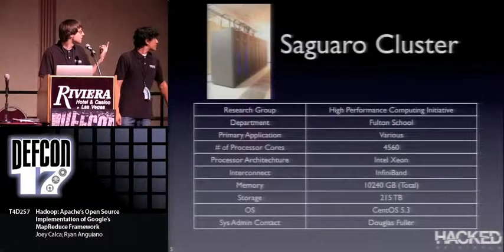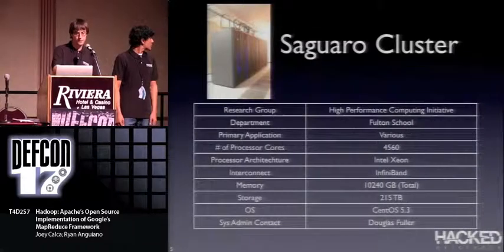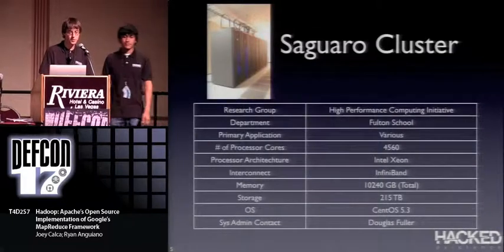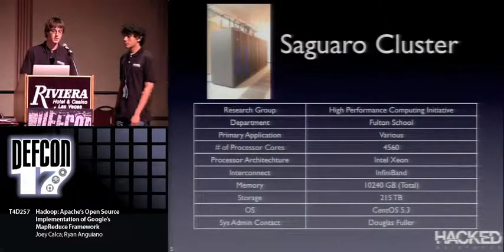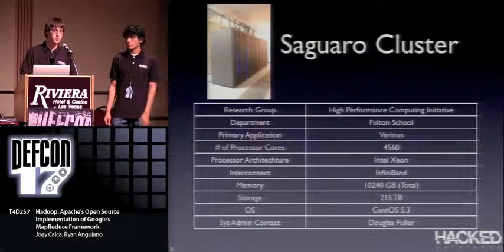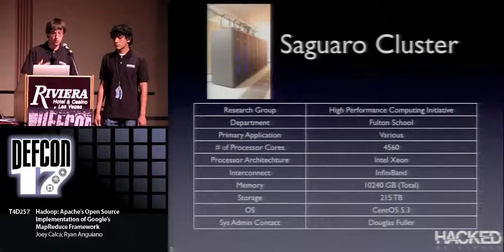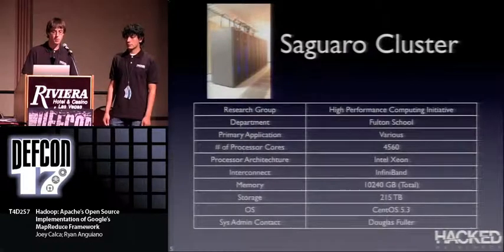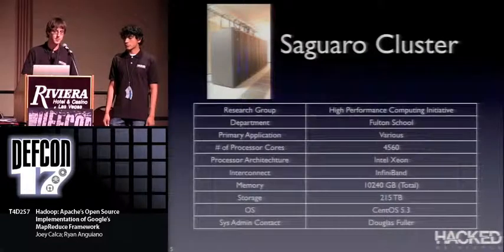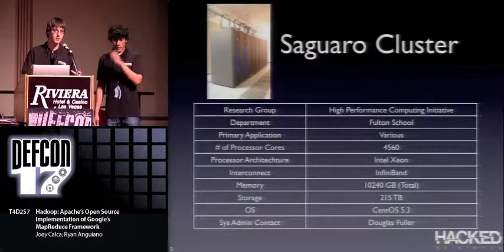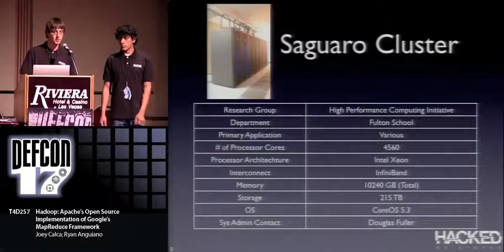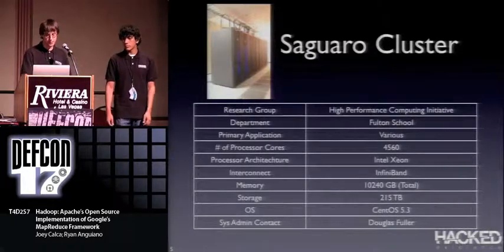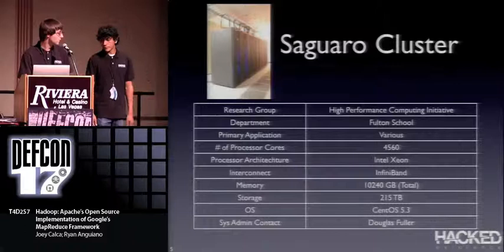A lot of our work was done on the Saguaro cluster at ASU, which had 4,560 processor cores. We had 50 hardware nodes, each with two processors that were quad-core, giving us eight cores per node. We create one mapper per processor, so with 50 hardware nodes we created 100 mapper nodes — running two mappers simultaneously on each hardware node. For the rest of the presentation, when we refer to nodes, we mean processors.